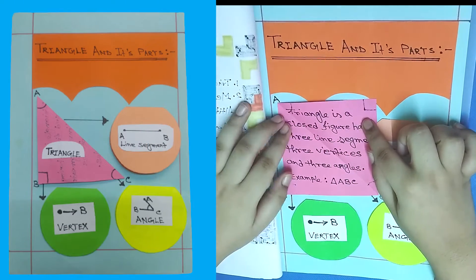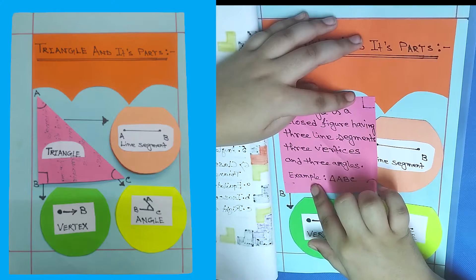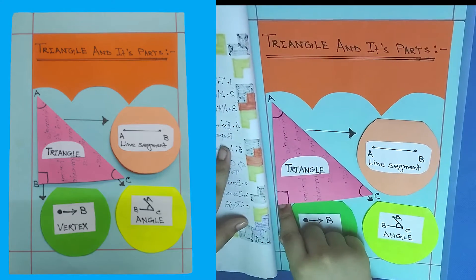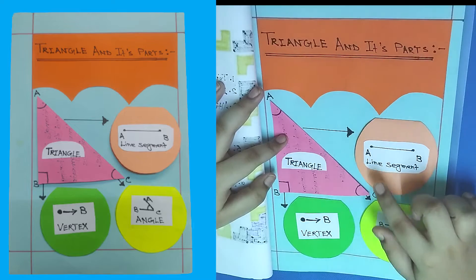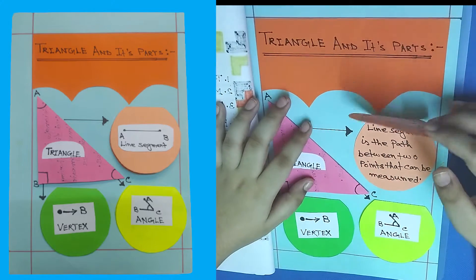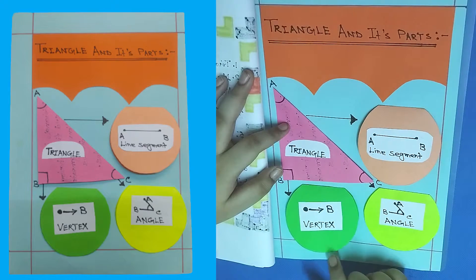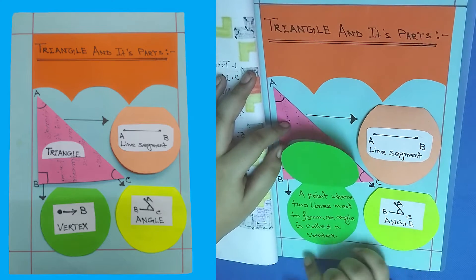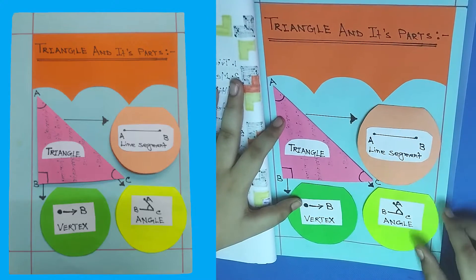First part — a triangle is a closed figure having three line segments, three vertices, and three angles. Example: triangle ABC. Next up is line segment — a line segment is the path between two points that can be measured. For example, AB is a line segment because it can be measured. A vertex is a point where two lines meet to form an angle.